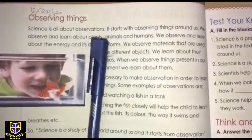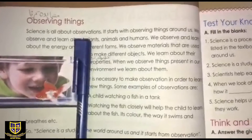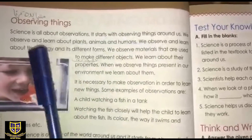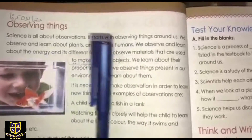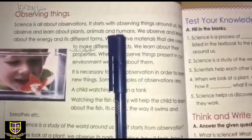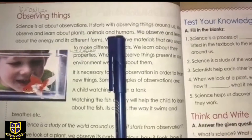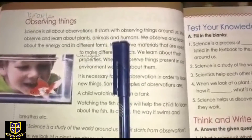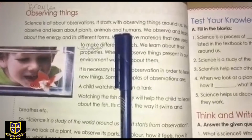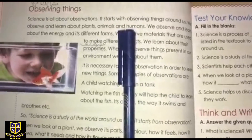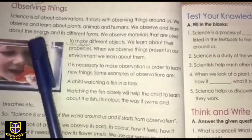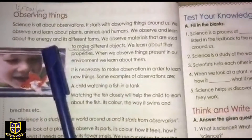Science is all about observations — science jo hai woh sub mushahida karne pe depend karta hai. It starts with observing things around us. We observe and learn about plants, animals, and humans. Science kahan se start hoti hai? Jab hum kisi cheez ko observe karna start kar dete hain, wahan se hi. We observe and learn about energy and its forms.